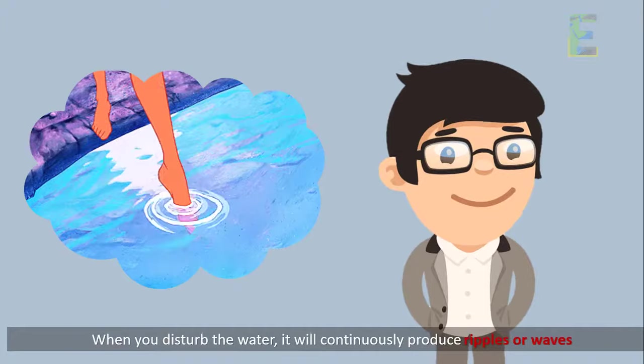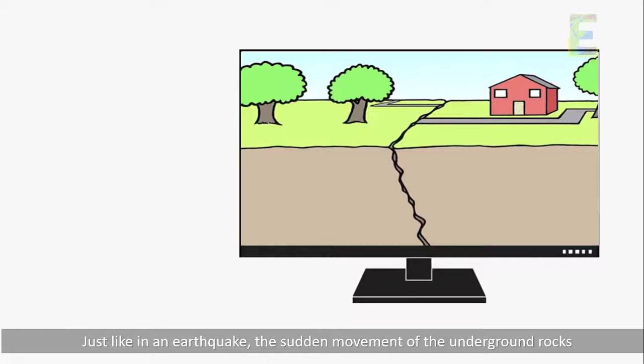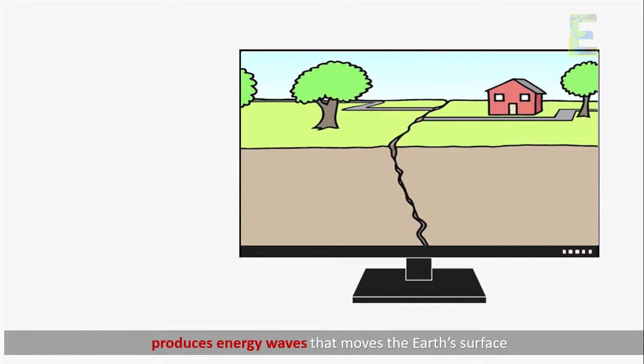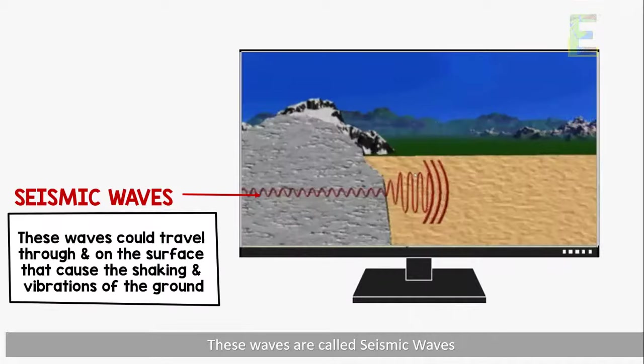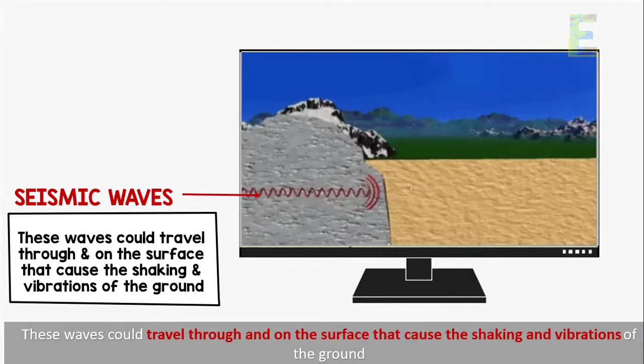What happens if you disturb the water of a pond? When you disturb the water, it will continuously produce ripples or waves. Just like in an earthquake, the sudden movement of the underground rocks produces energy waves that move the Earth's surface. These waves are called seismic waves, and they could travel through and on the surface, causing the shaking and vibrations of the ground.